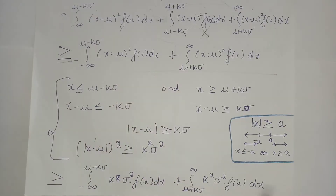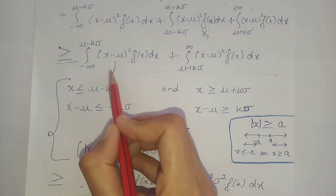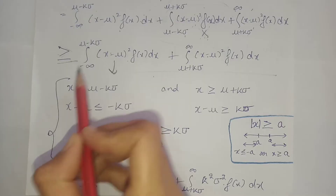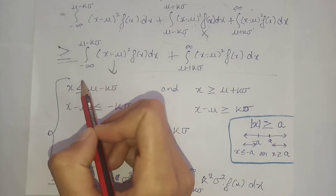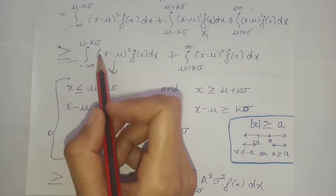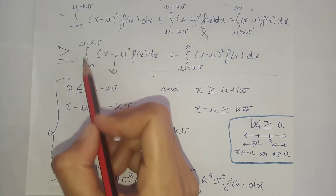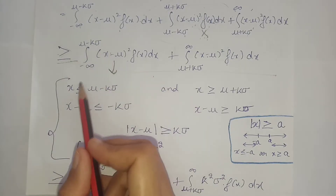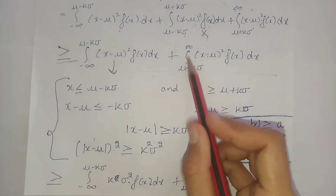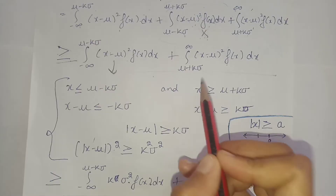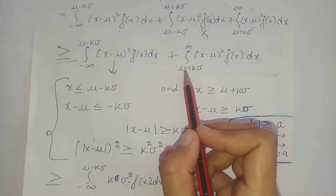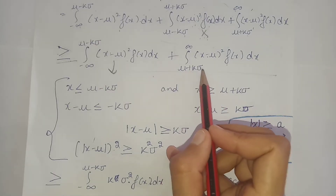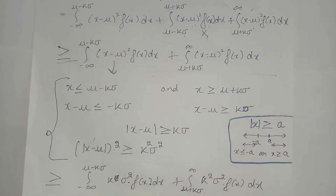Now for this remaining integral, x takes values where x is less than or equal to mu minus k sigma, or x is greater than or equal to mu plus k sigma. These are the two outer regions we kept.